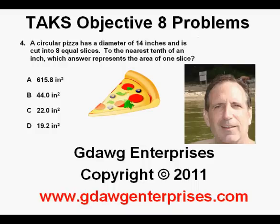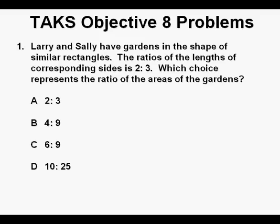TAKS Objective 8 Problems. Problem 1. Larry and Sally have gardens in the shape of similar rectangles. The ratios of the lengths of corresponding sides is 2 to 3. Which choice represents the ratio of the areas of the gardens?